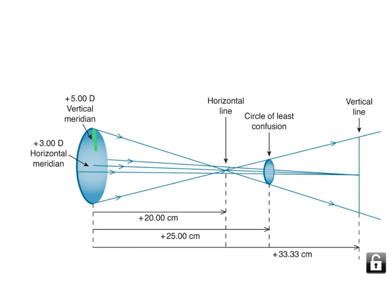Let's say this is the vertical meridian right here. There is a horizontal meridian. These two different meridians are different powers. Without astigmatism, they're uniformly round, uniformly powered. But with astigmatism, it's different.